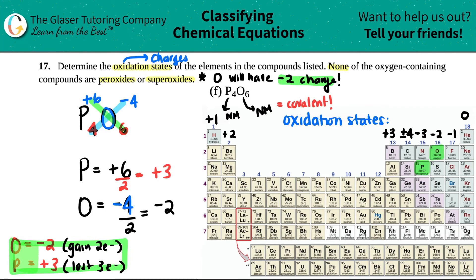So that is your final answer: oxygen is negative two — it gained two electrons — and phosphorus, being plus three, lost three electrons. Hopefully this helped! If it did, give this video a like and hit the subscribe button. I'll see you all in the next lesson. Keep studying hard — you've got this. Bye!